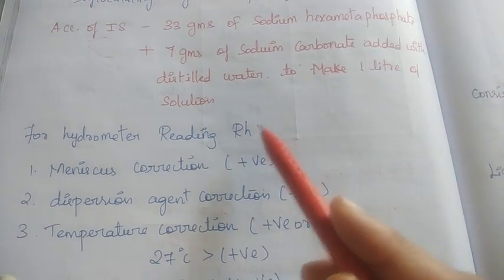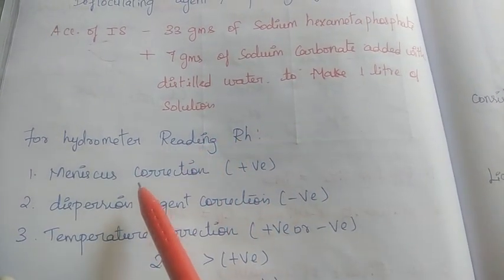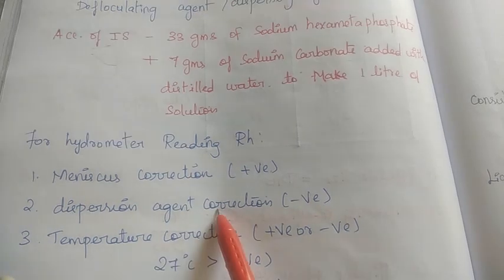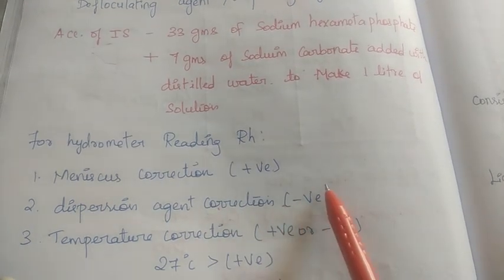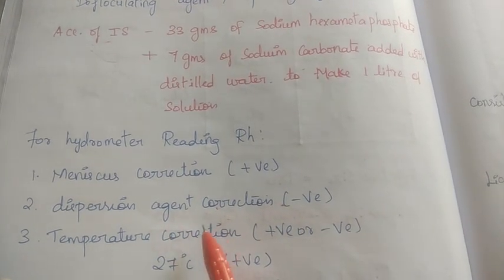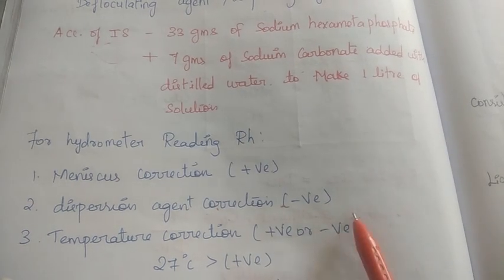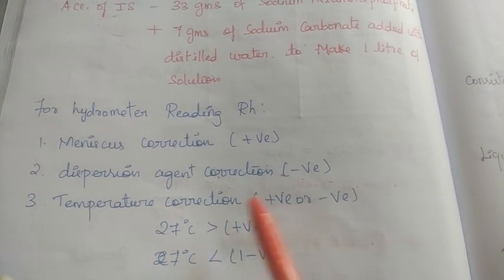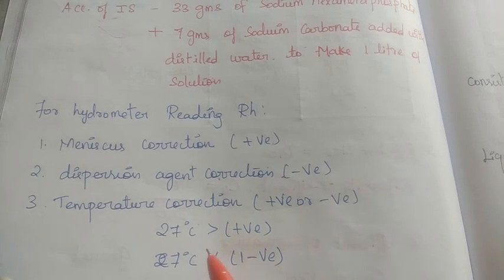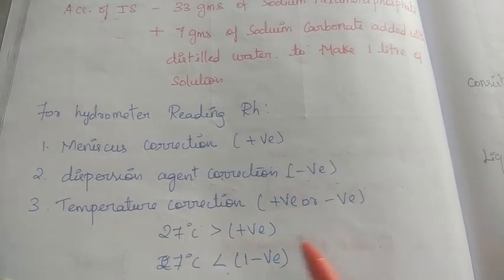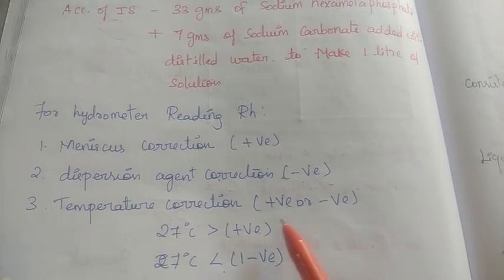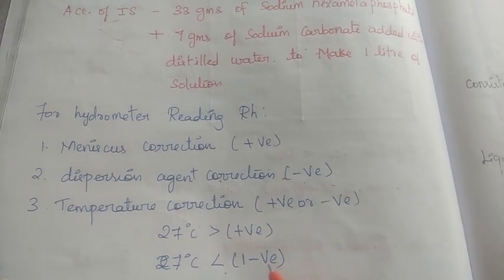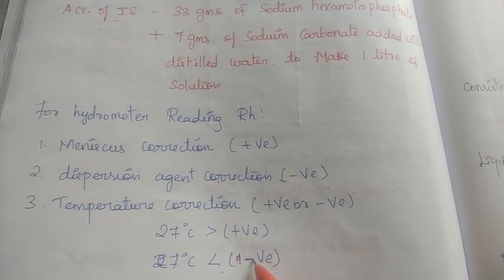This is very important for the sedimentation. In the hydrometer, we will analyze the corrections. Meniscus correction is positive. Dispersing agent correction is negative. For temperature correction: if temperature is less than 27 degrees Celsius, the correction is negative.